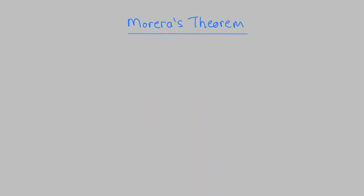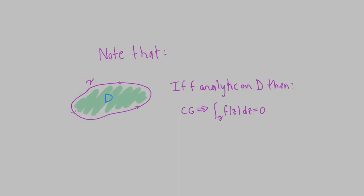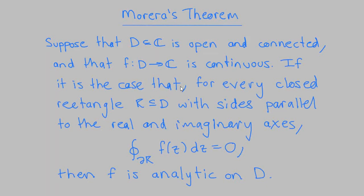The third important theorem is Morera's theorem. Note that if you have any piecewise smooth closed curve gamma and any function f analytic on the region gamma bounds, then by Cauchy-Goursat, the integral around gamma of f(z) dz equals zero. Morera's theorem provides a partial converse. If D is an open connected subset of the complex plane and f from D to ℂ is continuous, and if the integral around the boundary of every closed rectangle R with sides parallel to the axes is zero, then f is analytic on D.